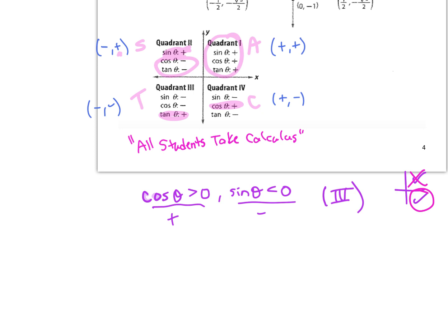The hand trick: if you don't have a unit circle in front of you and need to find coordinates or sine, cosine, and tangent values, you can use your left hand to figure them out.